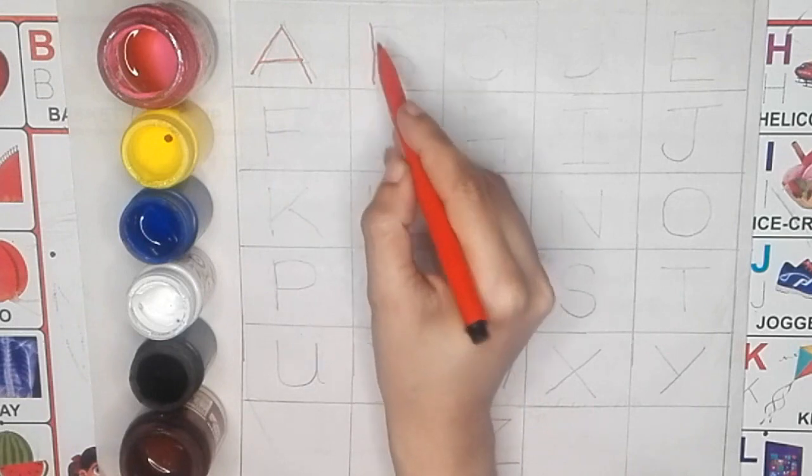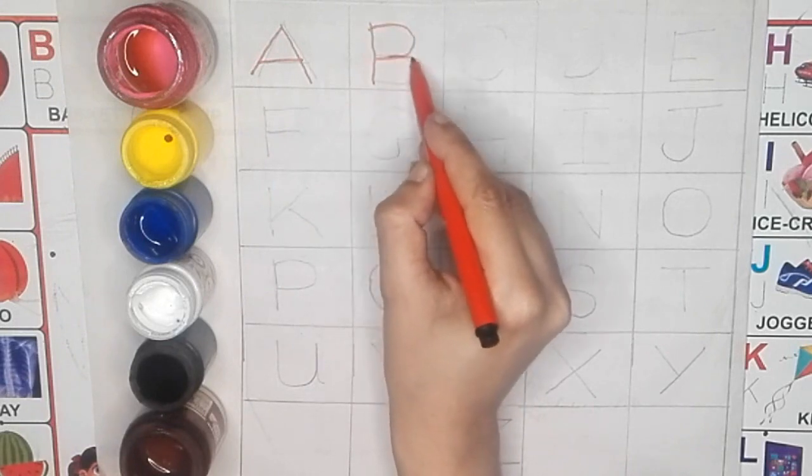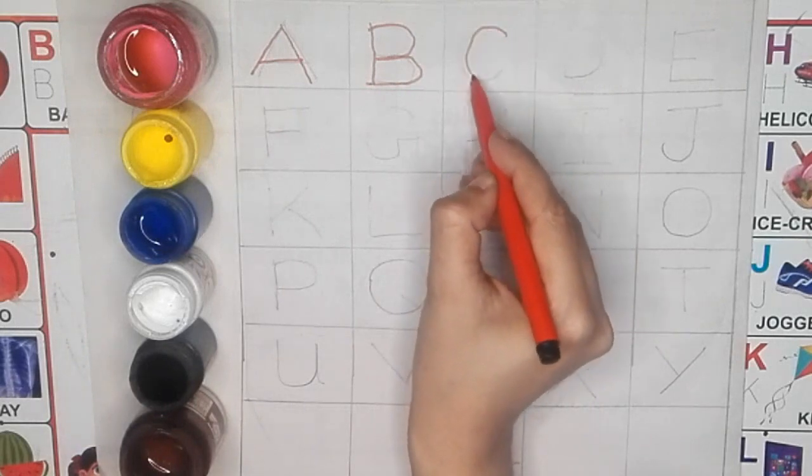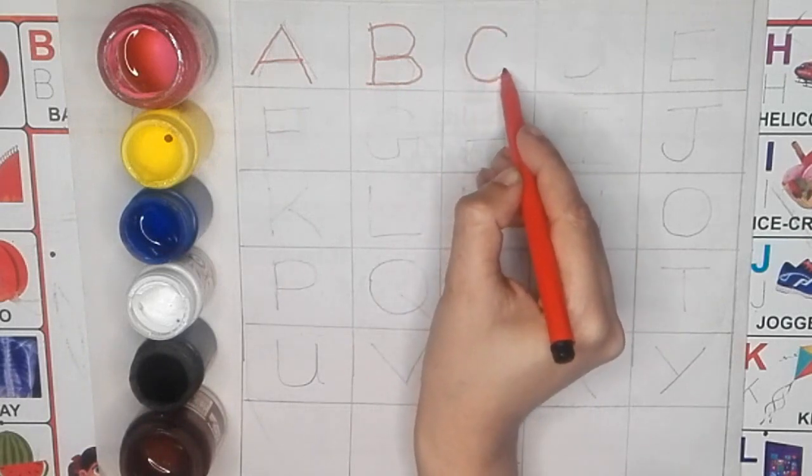B, B for box, B for box. C, C for cat, C for cat.